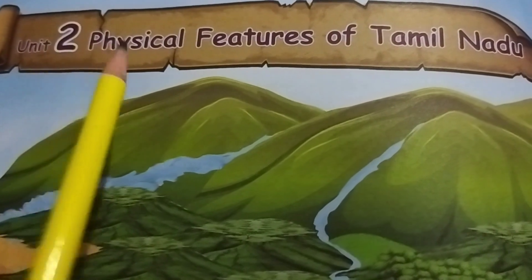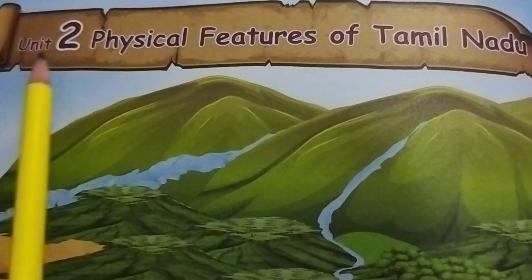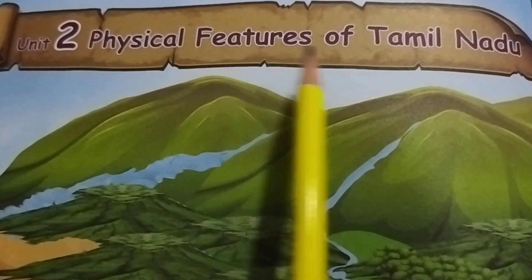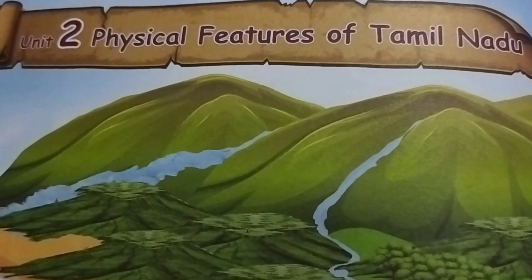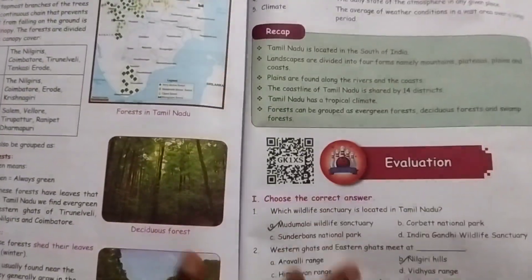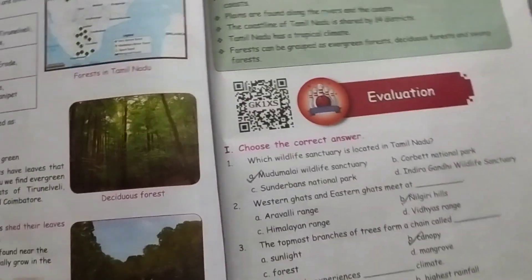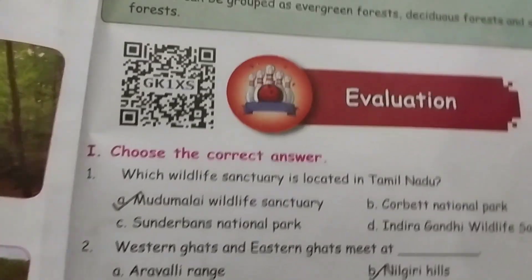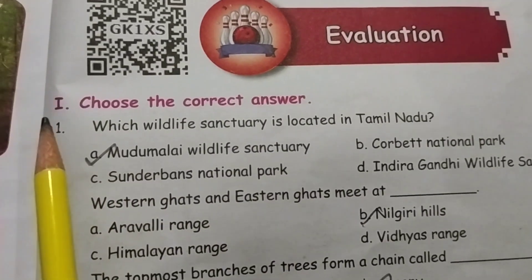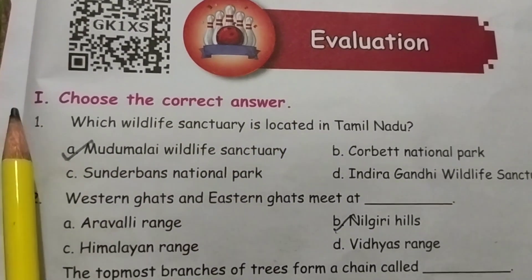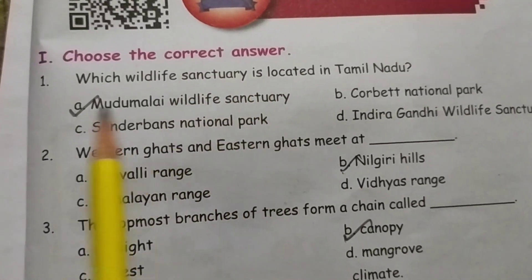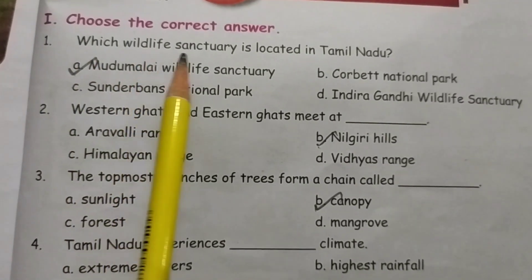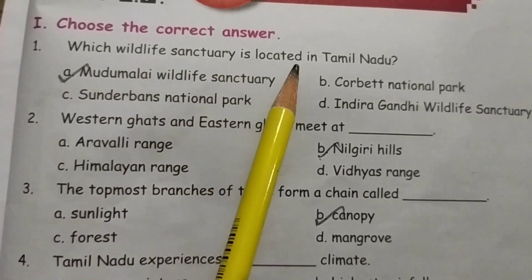4th Standard Social Science, Unit 2: Physical Features of Tamil Nadu. Book pack answers for page number 113, Evaluation Section. Roman numeral 1: Choose the correct answer.